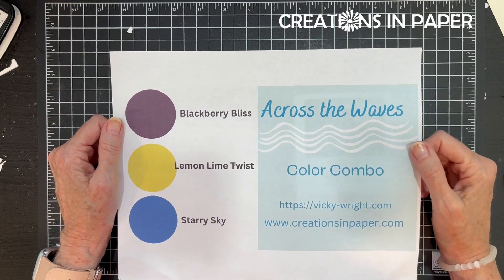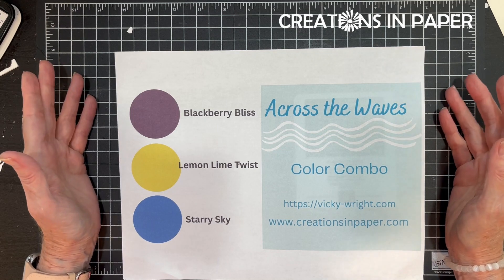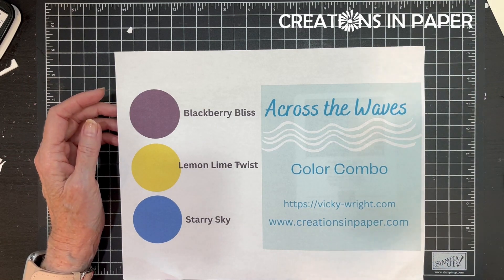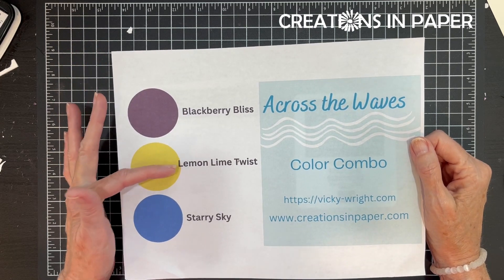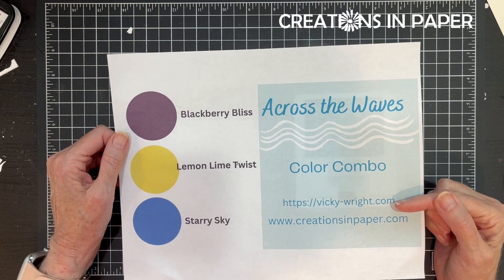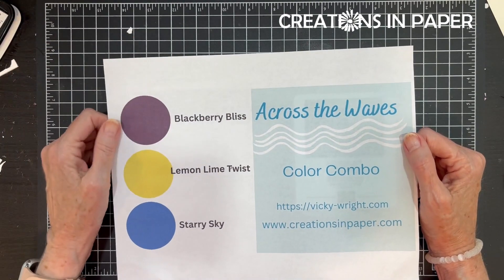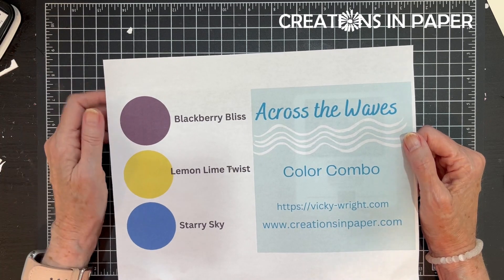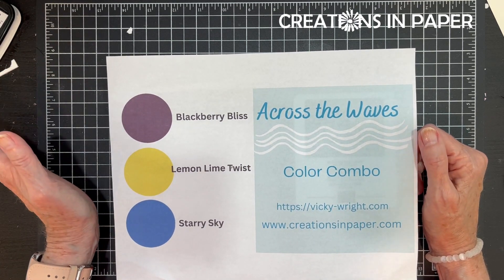Hello everyone, I'm so glad you have joined me today. Today is our last day for sharing projects using our color combo of Blackberry Bliss, Lemon Lime Twist, and Starry Sky. Make sure you check out Vicky's blog - I've linked it in the information section below, or her video anyway, and see what she did with these colors. I bet it's adorable.